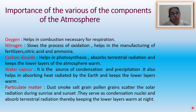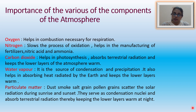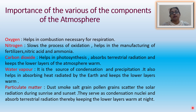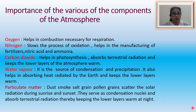Water vapour is the source of condensation and precipitation. It helps in absorbing heat radiated by the earth and keeps the lower layers warm. Particulate matter found floating in the atmosphere also plays a very significant role. Dust, smoke, salt, pollen grains scatter the solar radiation during sunrise and sunset — the orange hue you see during sunrise and sunset is mainly because of the presence of these particulate matter. They also serve as condensation nuclei and absorb terrestrial radiation, thereby keeping the lower layers of the atmosphere warm during the night.